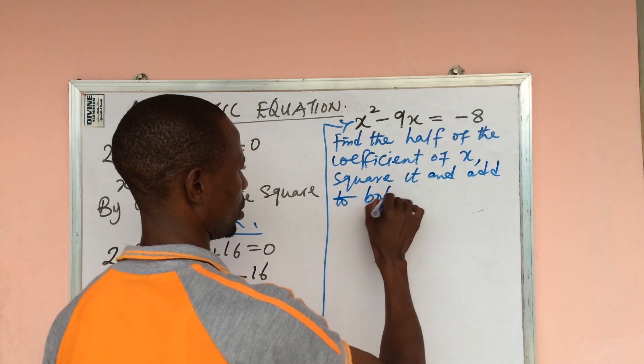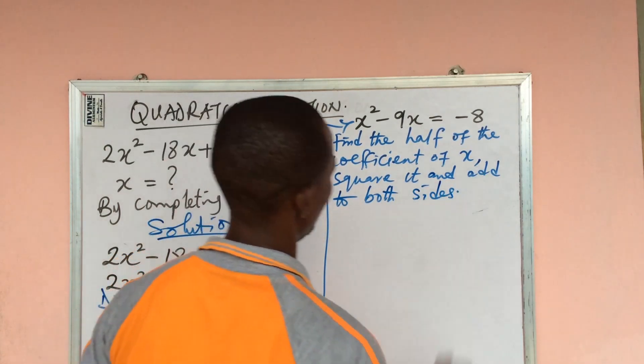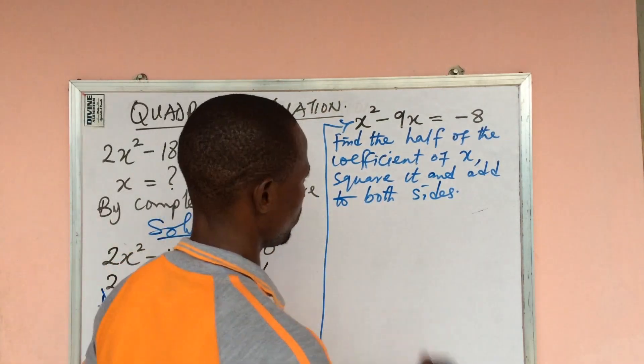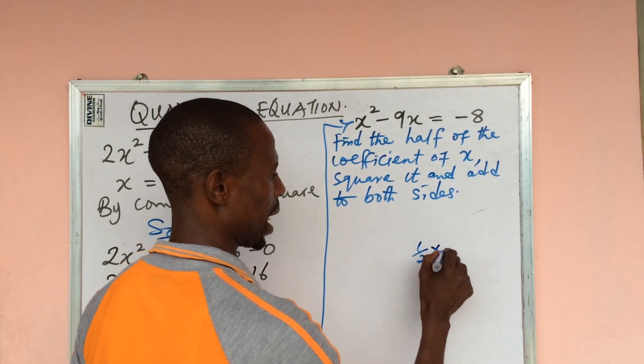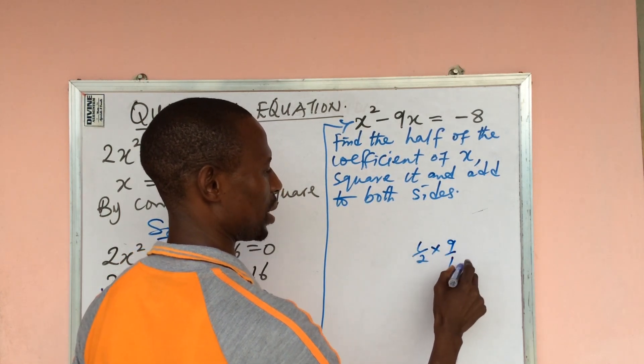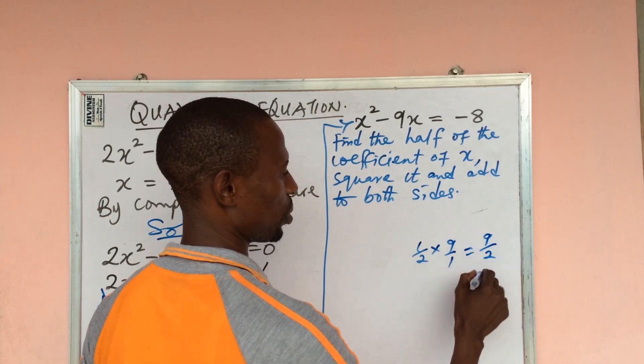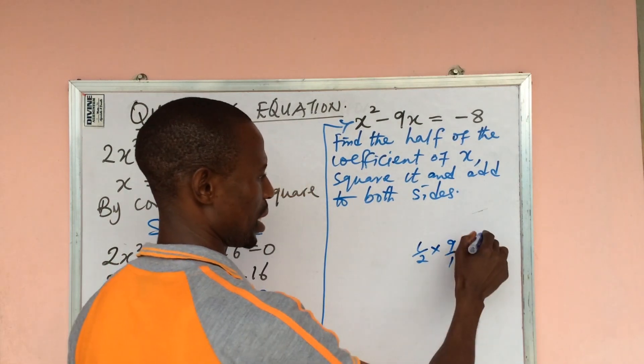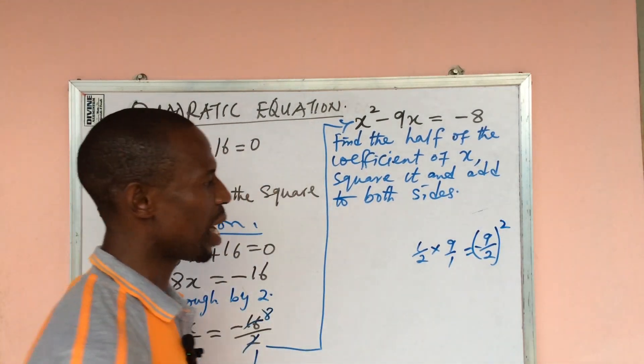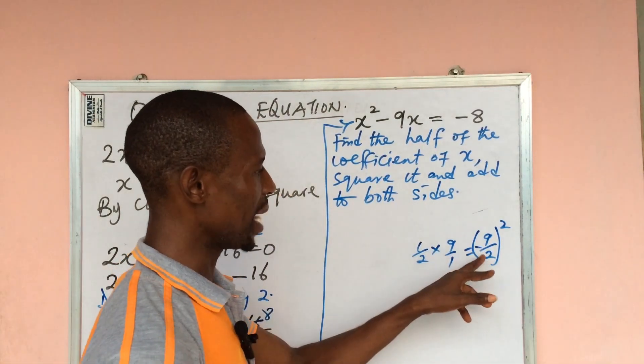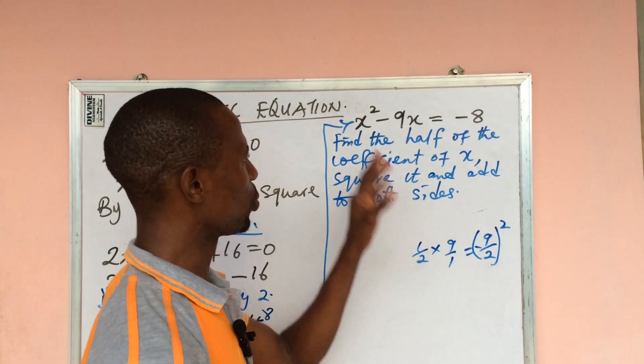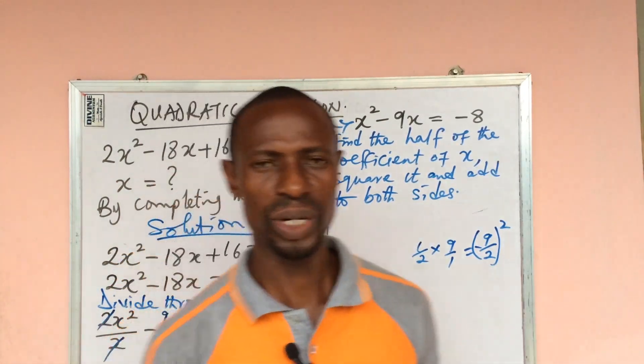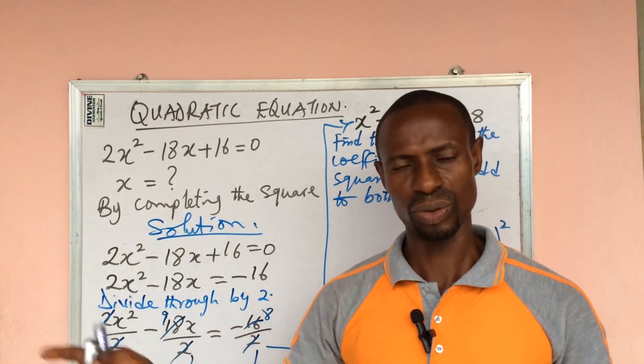So if we look at this, the half coefficient of x is 1/2 × 9/1 which equals 9/2. And we're having a minus sign, so we square everything. So we are going to add the square of -9/2 to the left hand side and also to the right hand side, because according to the law of equation, whatever you do to the right hand side you must do to the left hand side.